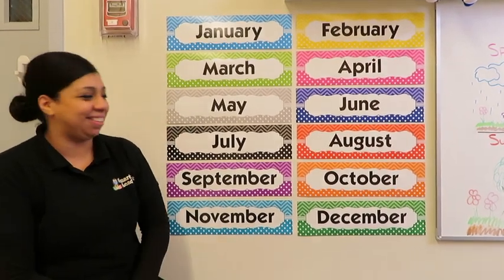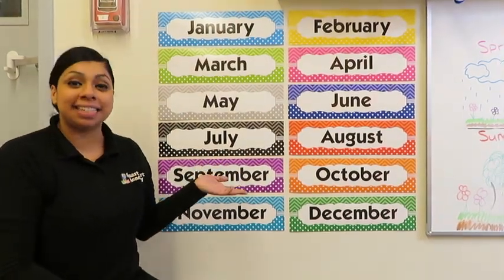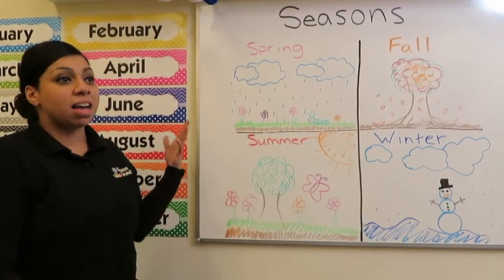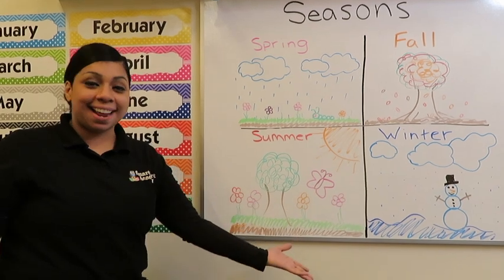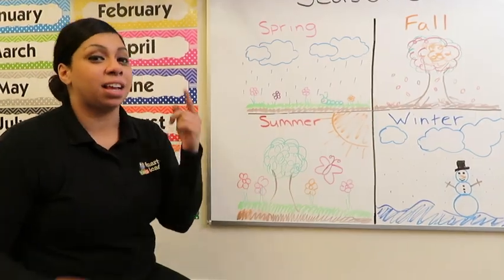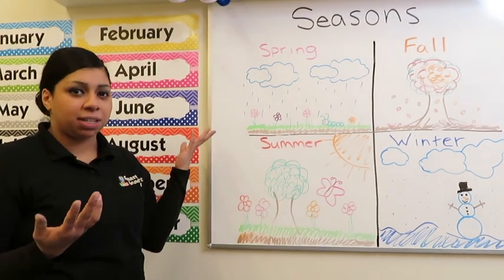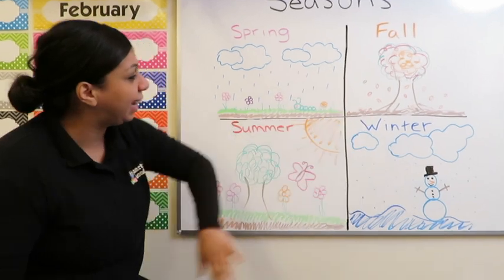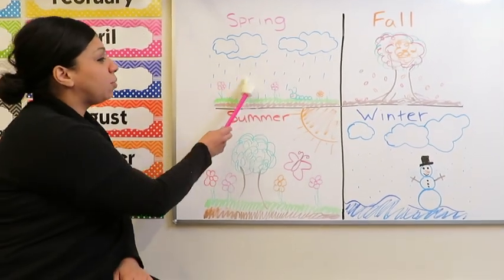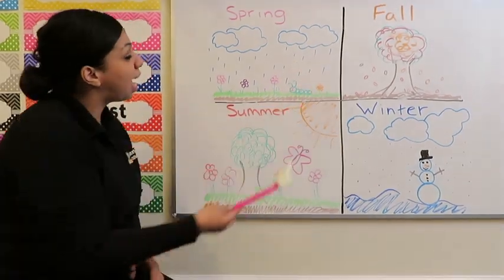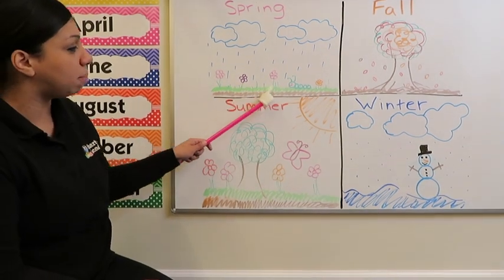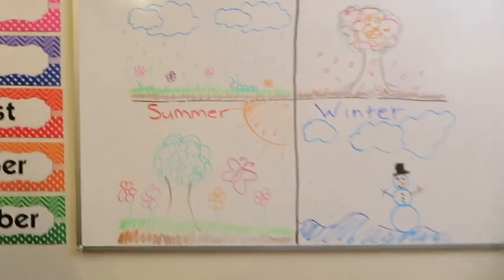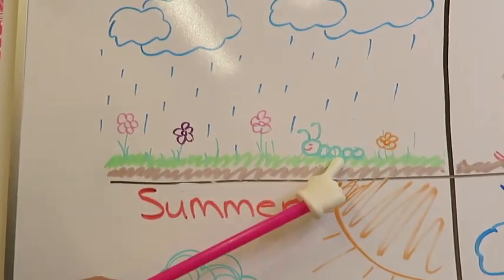I miss singing that song with you guys. Now let's do the seasons. For our first season, I want to start with spring because we're in spring right now. What are two things that you can think of that happen in spring? Well, first, it gets very rainy. You can see all the rain coming down from the clouds, and the flowers are starting to come out. Oh hey, is that a caterpillar? It's definitely a caterpillar.